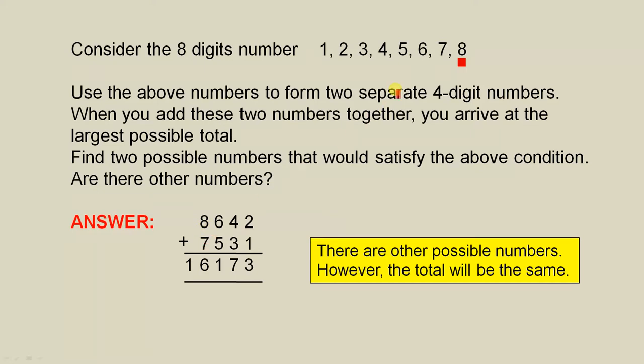Then you go for the next digit which is the six and you put it there. You put the five there and so on. Four here, three there, two here and one there. And when you add those together, you get 16,173. So that's the largest possible total you can have.